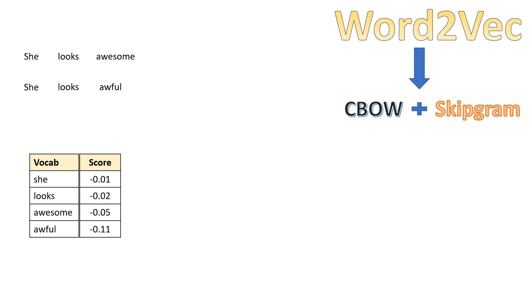CBOW is nothing but continuous bag of words, and Skip Gram. These two techniques are at the core of Word2Vec. What these two techniques are, we will see in upcoming videos in detail. Over here, let's understand how these two work. Both of these two techniques work on cosine similarity. Based on the cosine similarity, both of these two techniques use cosine similarity and do this kind of scoring.